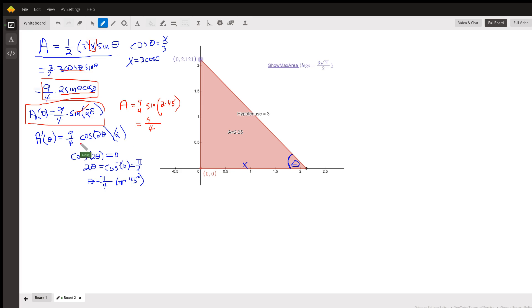If we set that equal to zero, these numerical coefficients will just cancel out. So the cosine of two theta is zero. So two theta equals the angle that has a cosine of zero, which is pi over two or 90 degrees. So theta, if we divide, is pi over four, 45 degrees.